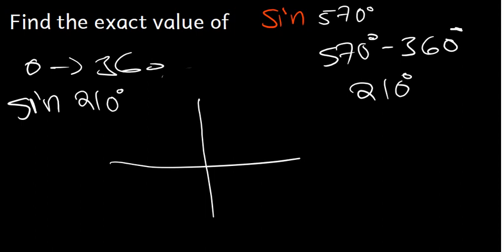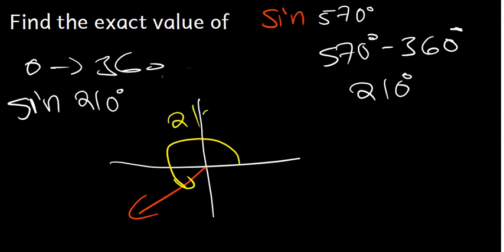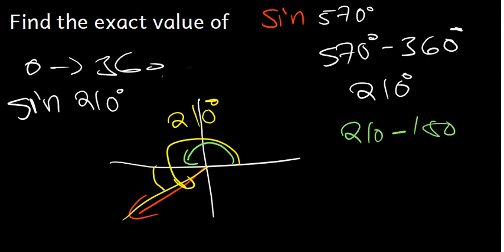We need to find the terminal angle for 210°. This angle is found in the third quadrant. The angle from the positive x-axis all the way to our point is 210°, but the terminal angle is the angle between the x-axis and the point of interest. From 180° to 210°, we calculate: 210 minus 180 equals 30 degrees.